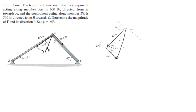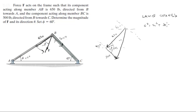Now we have two sides and the angle between them. Whenever you have two sides and the included angle in a triangle and need to find the other components, you should start with the law of cosines, which states that c² = a² + b² − 2ab·cos(C), where C is the angle between them.